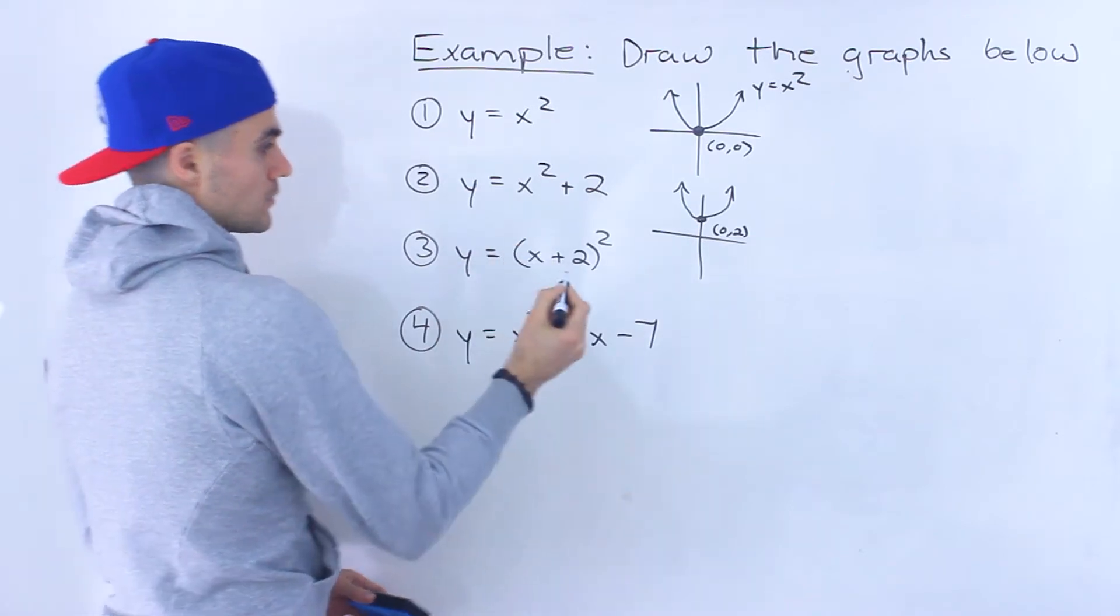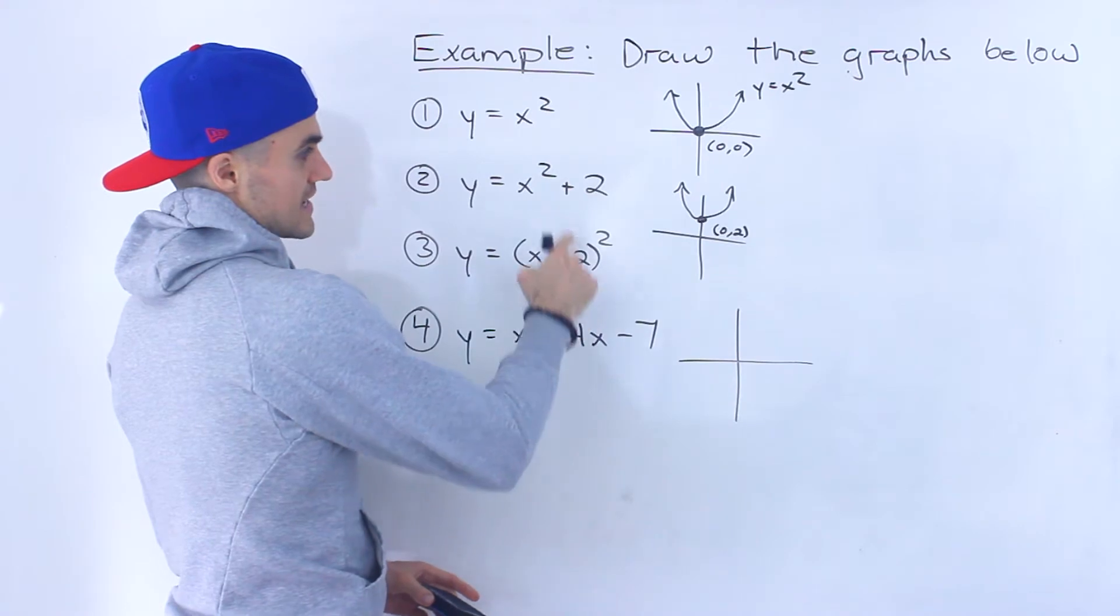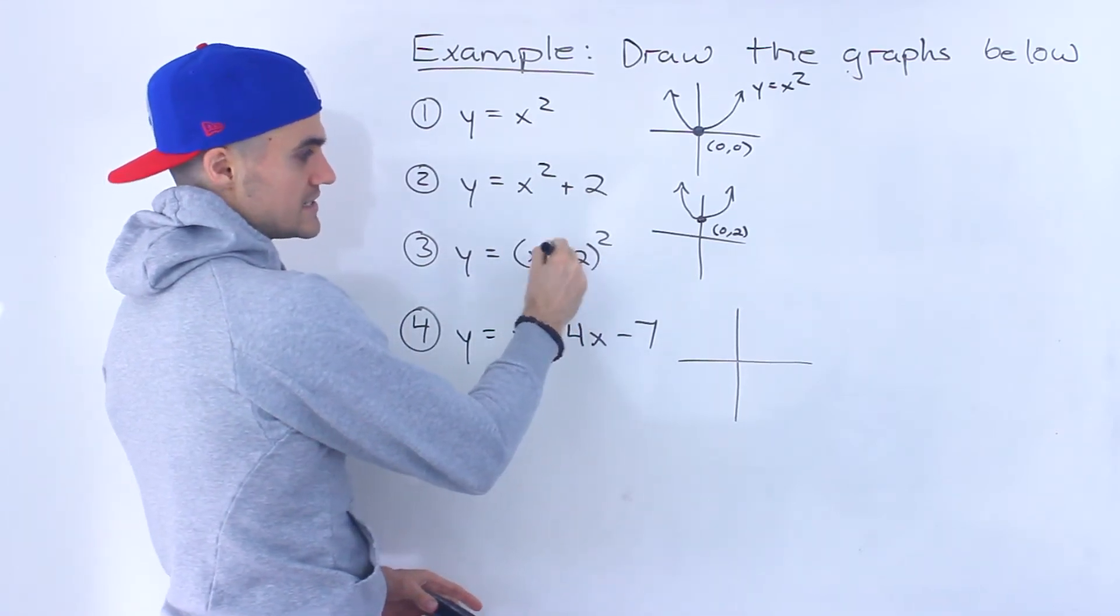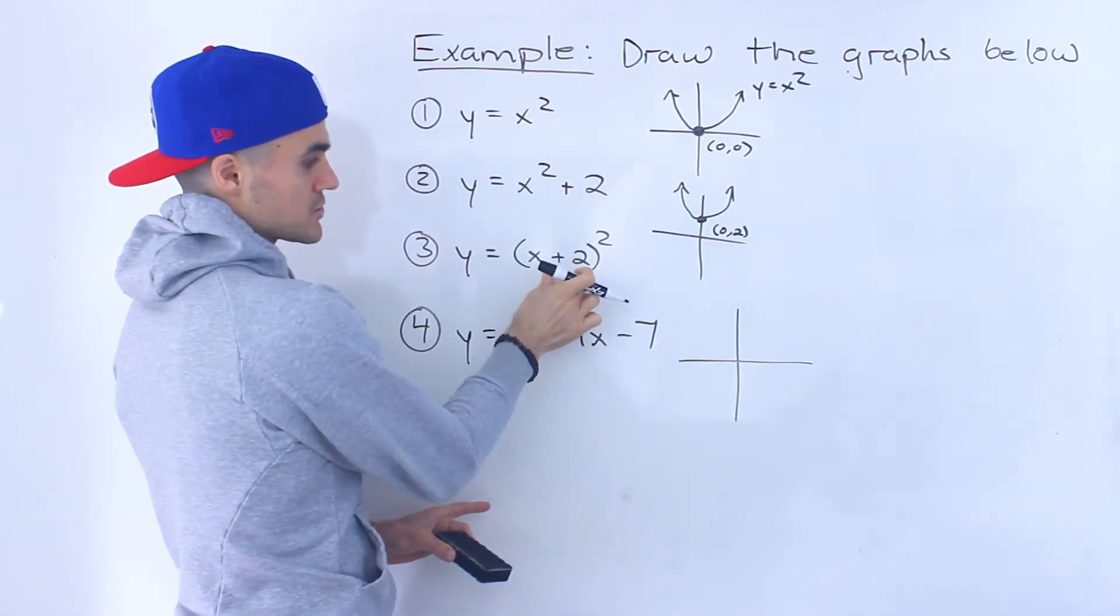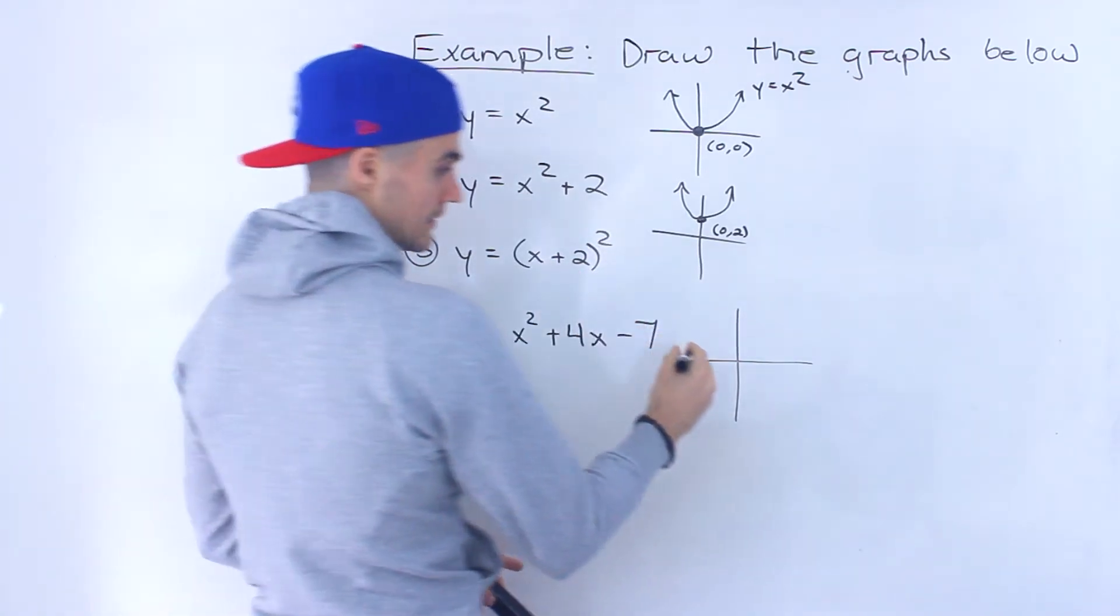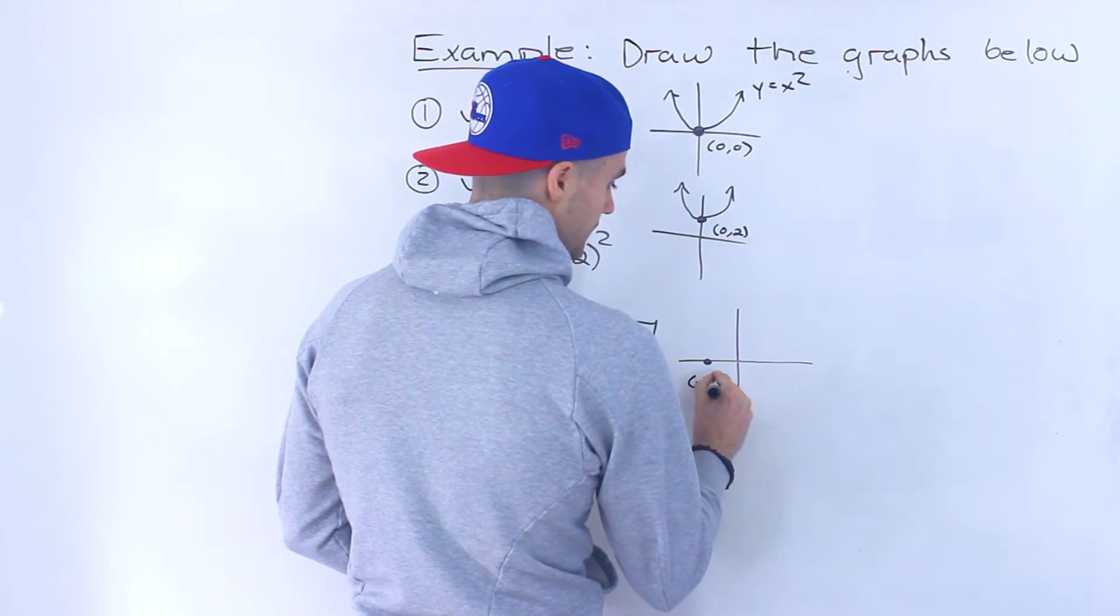And then y equals x plus two squared. This is different than this because this over here is the d value. If you remember your transformations from high school, so basically x plus two, we're shifting x squared two units to the left. So the vertex is going to be at negative two and zero.